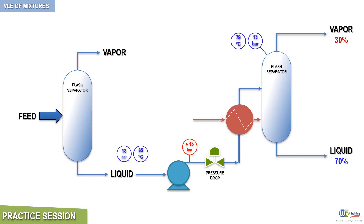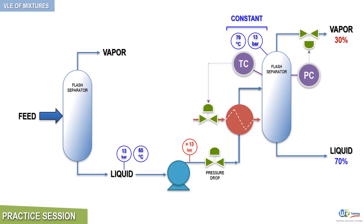In addition, we can improve this process arrangement by adding a basic process control system to it. Since the objective of the second flash separator is to yield a constant 30% vapor overhead, the operating temperature and pressure of the separator must be held constant. This can be achieved by adding two control loops: one loop will act on pressure and the other on temperature, as depicted here. The pressure control loop is based on the separator's overhead pressure.